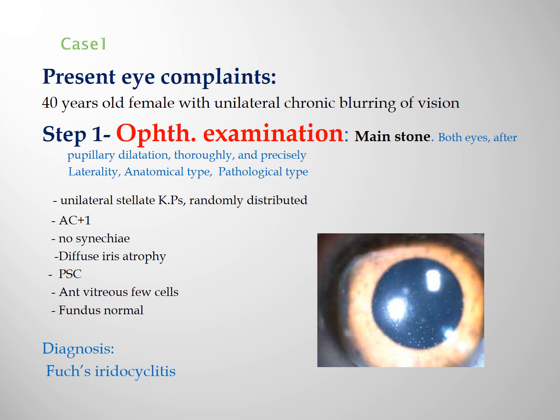Case number 1: a 40-year-old female with unilateral chronic blurring of vision. Step 1 in the diagnosis is ocular examination, which is the cornerstone. We detect unilateral stellate KPs randomly distributed, plus-1 cells in the anterior chamber, no synechiae, diffuse iris atrophy, posterior subcapsular cataract, few cells in the anterior vitreous, and normal fundus. The diagnosis is Fuchs uveitis cyclitis, concluded by ocular examination alone, with no need to proceed to systemic manifestations or lab investigations.